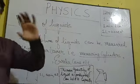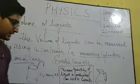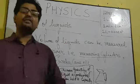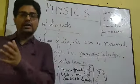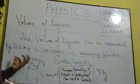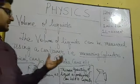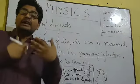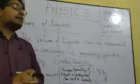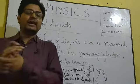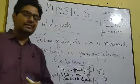We have different types of devices: measuring cylinders, conical cans, and Eureka cans of different capacities, using which you can measure the volume of liquids.